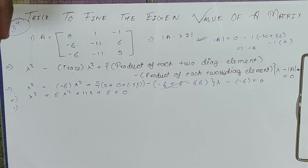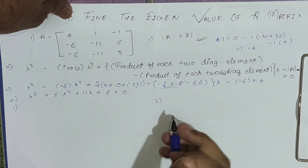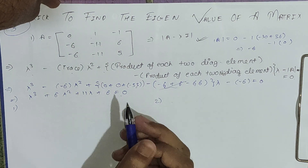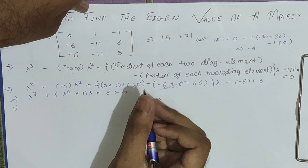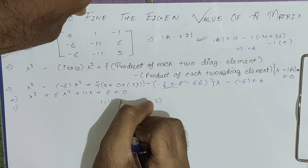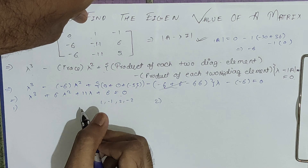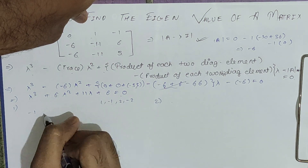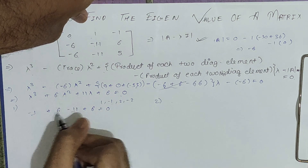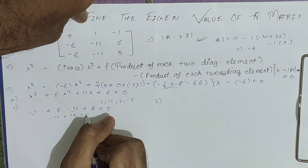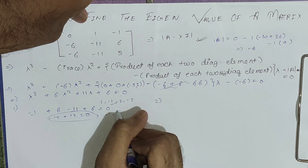There are two methods to solve this cubic. Method 1 is the standard approach: guess one root, then find the others. We try lambda equals 1, minus 1, 2, or minus 2. Putting in 1 gives all positive terms, so 1 cannot be a root. Putting in minus 1: minus 1 plus 6 minus 11 plus 6 equals zero. So minus 1 satisfies the equation and is one root.